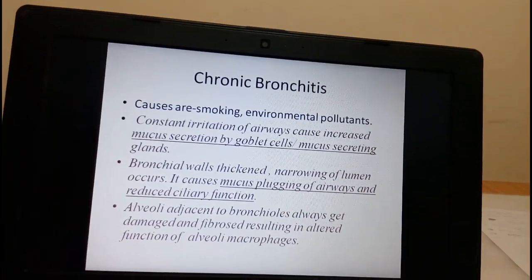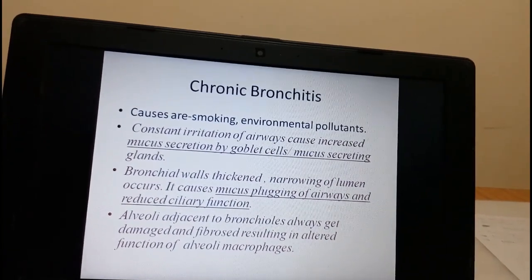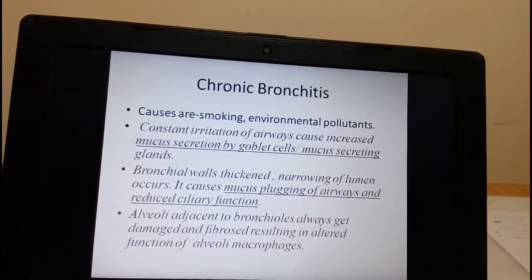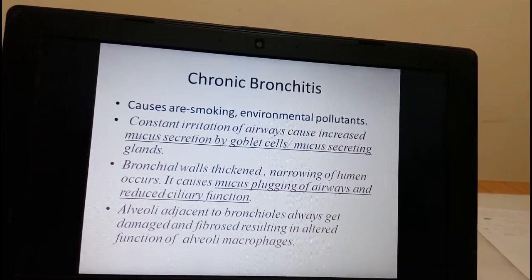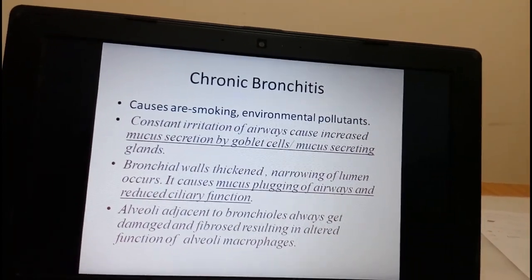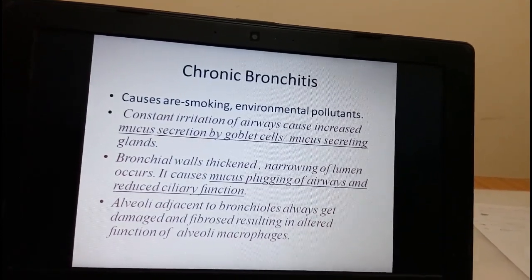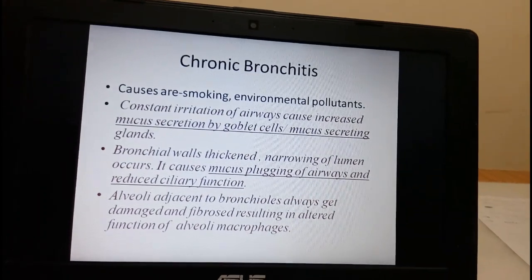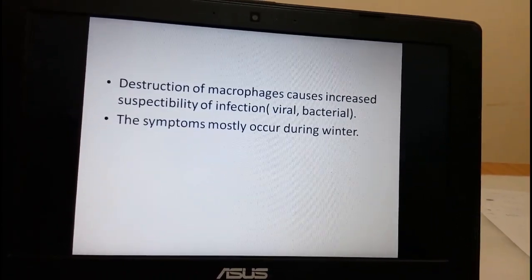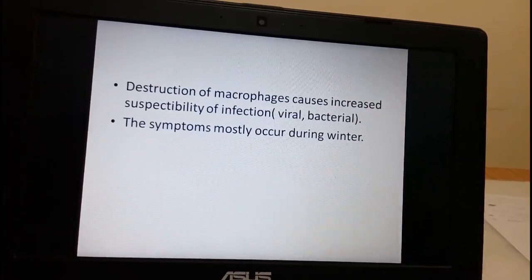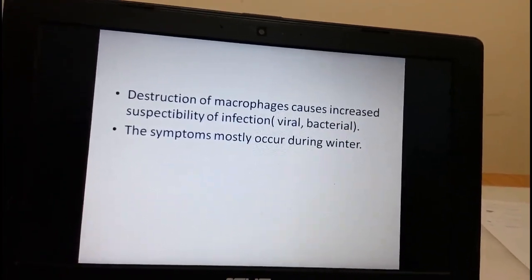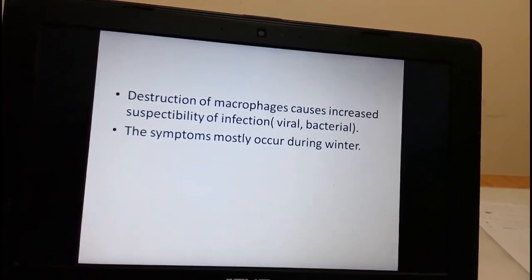Let us first see chronic bronchitis. The main cause is smoking. In chronic bronchitis, constant irritation of the airways causes increased mucus secretion by the goblet cells. The walls of the bronchi get thickened, causing narrowing of the lumen, mucus plugging, and reduced ciliary function. The alveoli attached to the bronchioles are also damaged and fibrosed, resulting in altered function of alveolar macrophages. This leads to increased susceptibility to infection, repeated chest infections, and a lot of cough and sputum production.